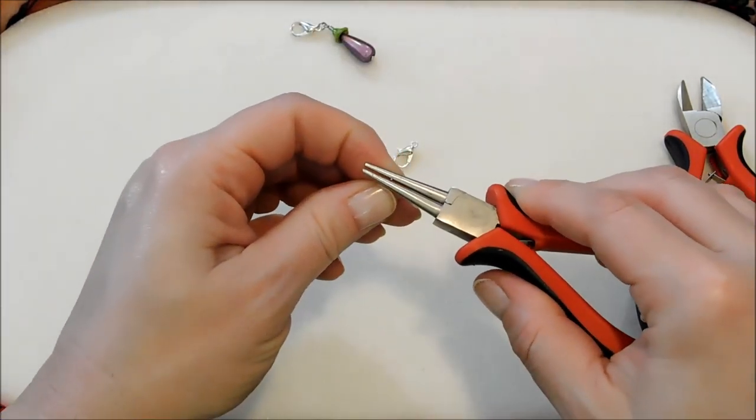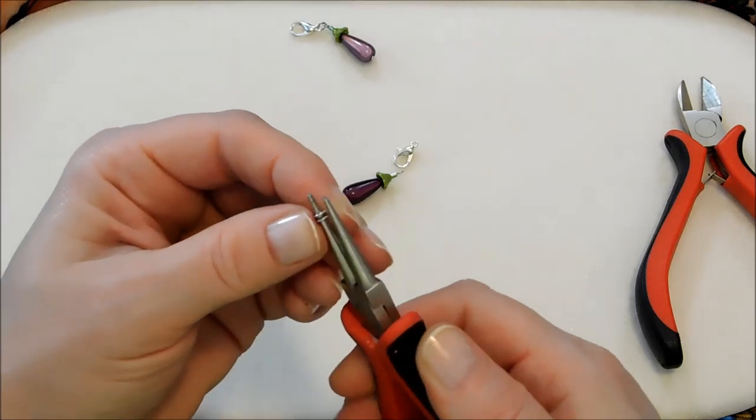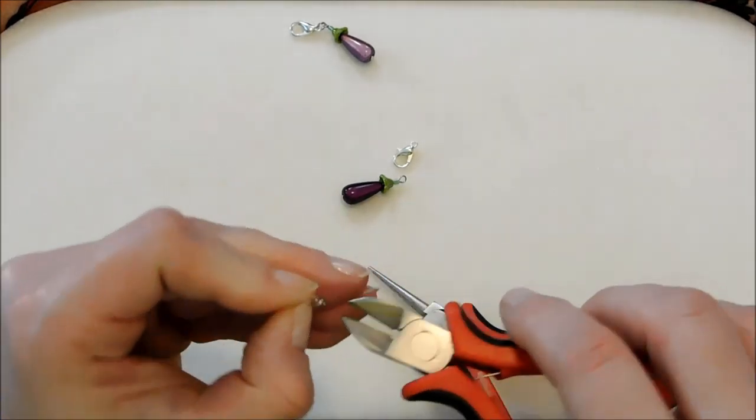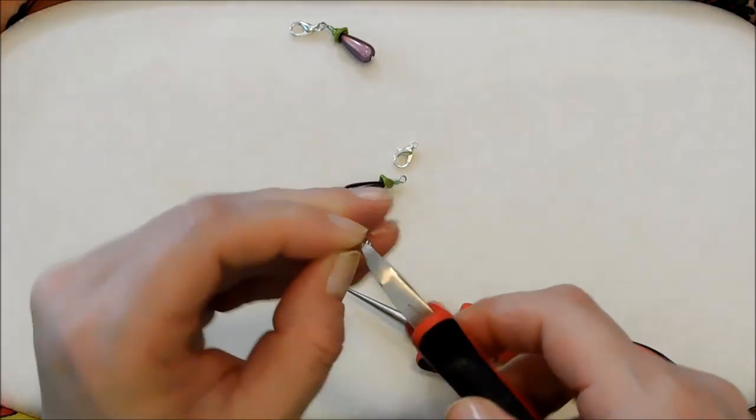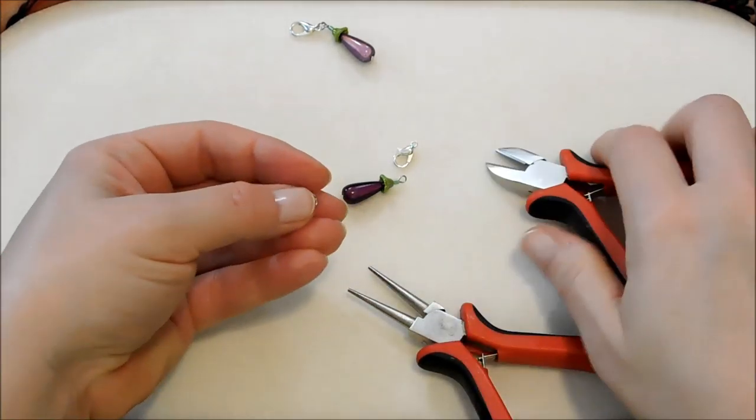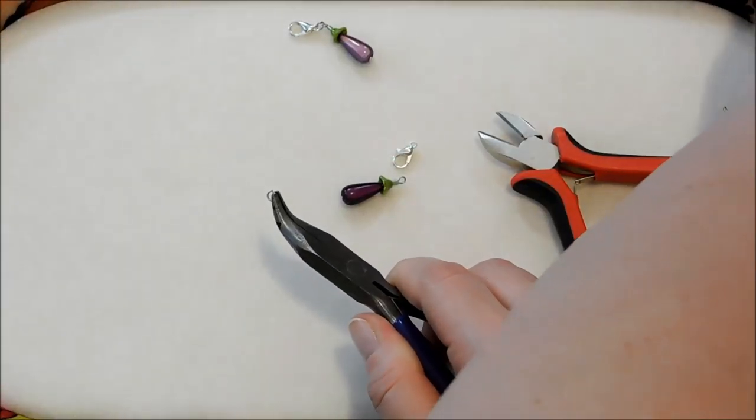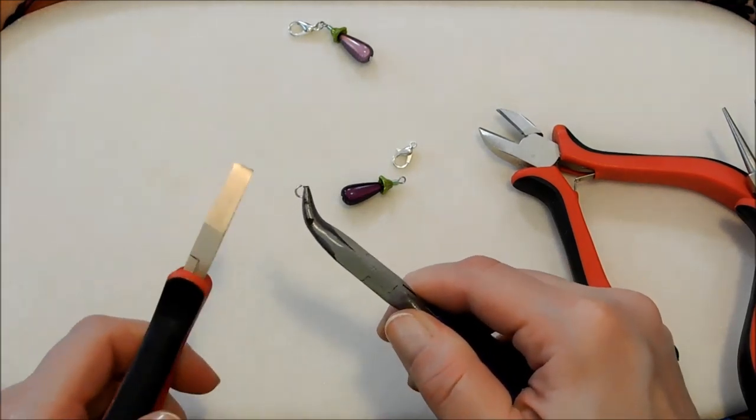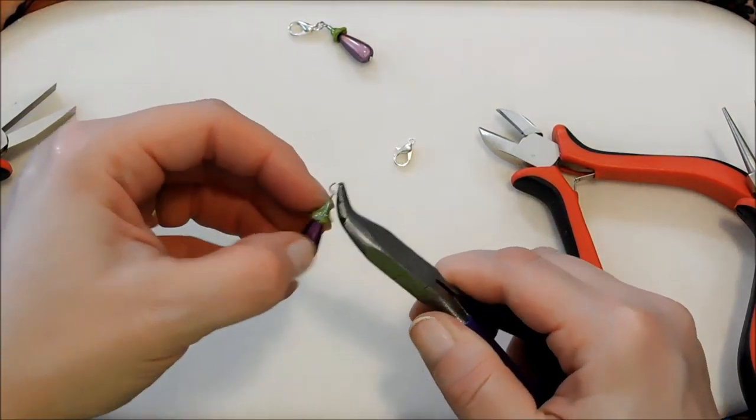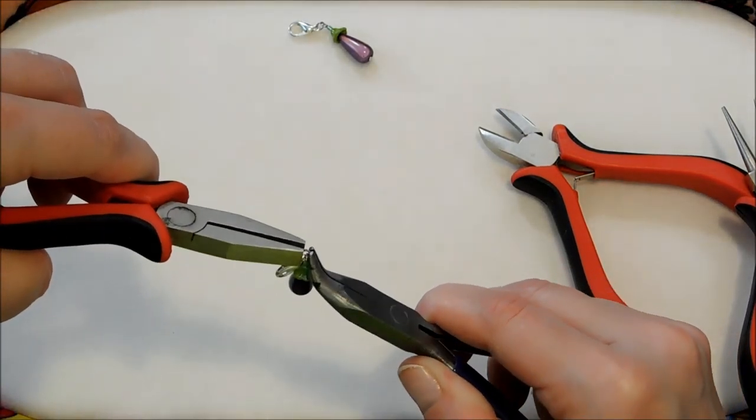And then create our jump ring. I just kind of pick a spot along the shaft of my round nose pliers that is about the size that I think I want my jump ring to be and I just go with that by eyeballing it. And then clip that off right where they come around and meet. Then I'm going to take my chain nose pliers, curved or straight, either way you want to do it. Just open that jump ring up, dangle on our eggplant, and then our lobster clasp, and close that back up.